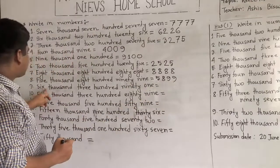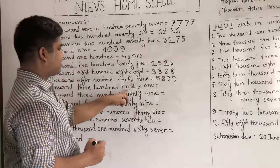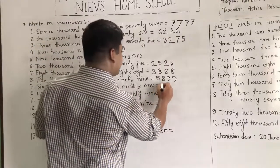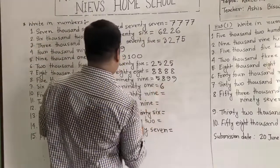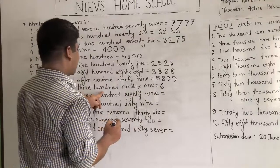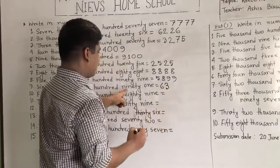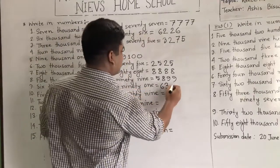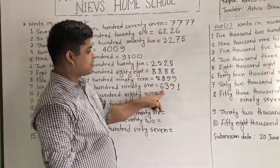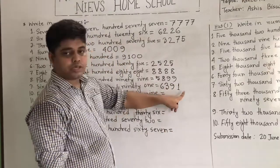Next, 6,391. So we write 6,000 — that means 6 first. Then 300, that means write 3. Then 91, that means write 91. So it is read as 6,391.